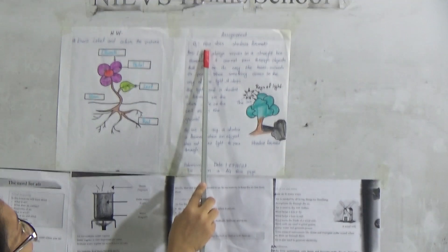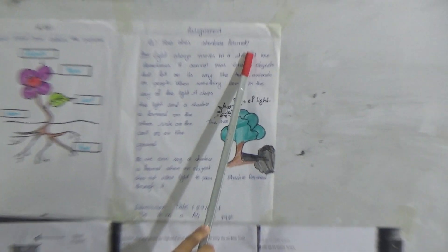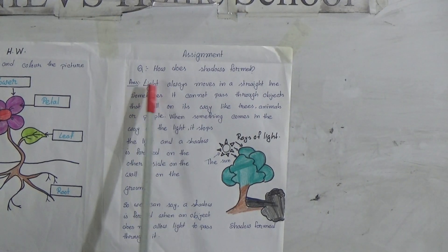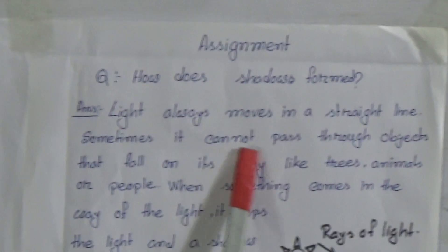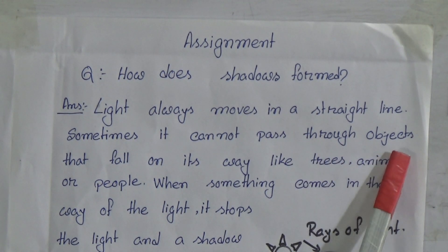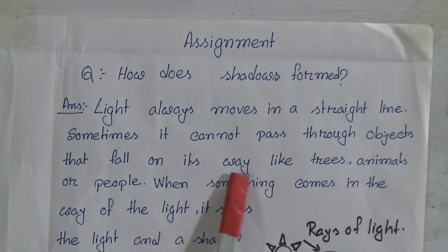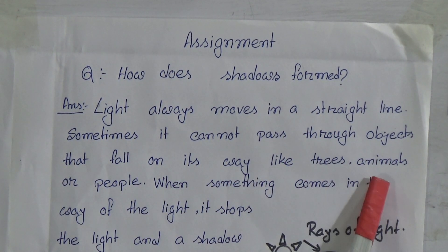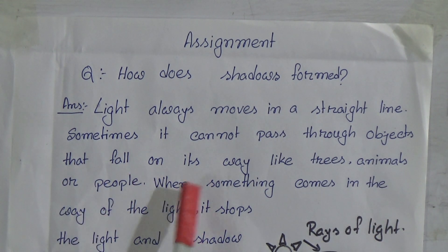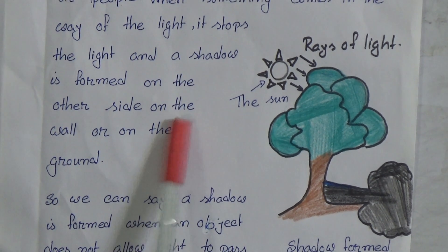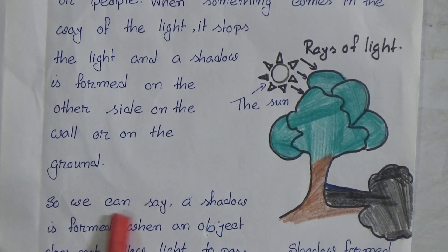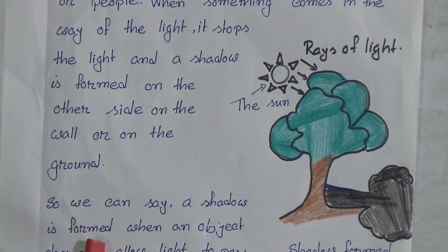Assignment question: How does a shadow form? Answer: Light always moves in a straight line. Sometimes it cannot pass through objects that fall on its way, like trees, animals or people. When something comes in the way of the light, it stops the light and a shadow is formed on the other side of the wall or on the ground.